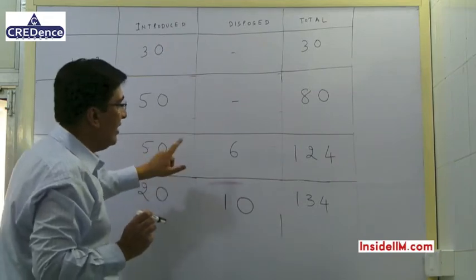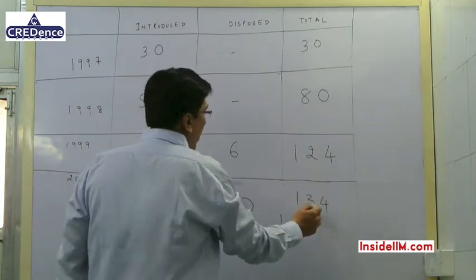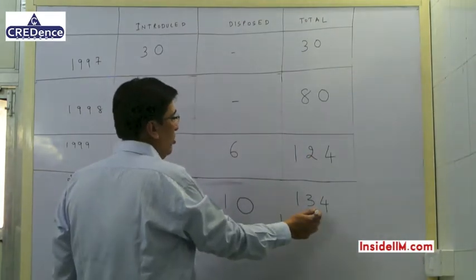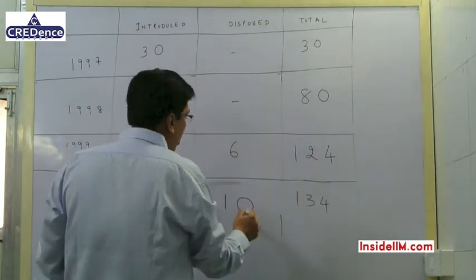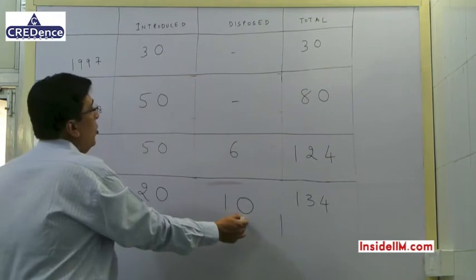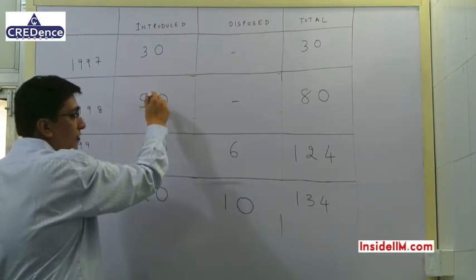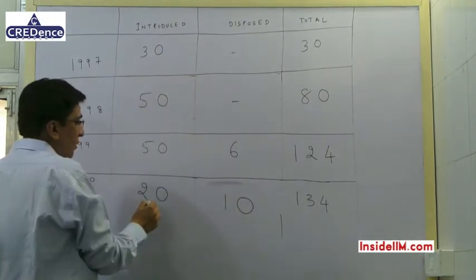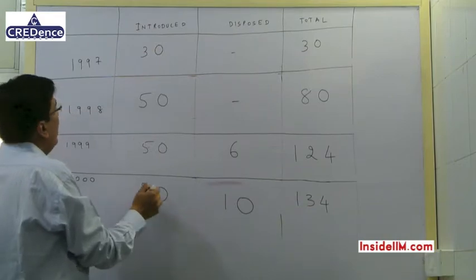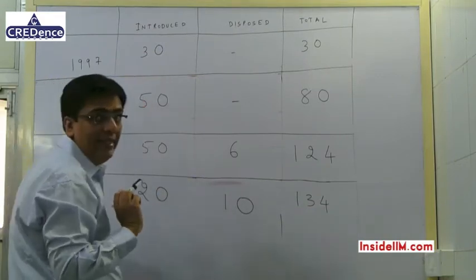Continuing the same pattern for 2000, we see 134 Mixture Grinders. We know 10 have been disposed of, which is 20% of 50, meaning 20 Mixture Grinders were introduced in 2000.